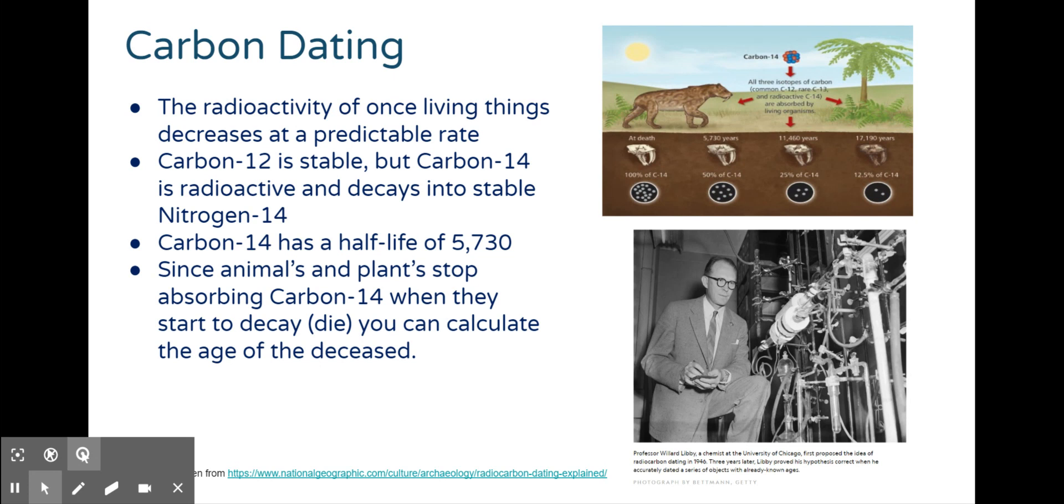We use half-lives in carbon dating. The radioactivity of once-living things decreases at a predictable rate. Carbon-14 decays to nitrogen-14 with a half-life of 5,730 years. Animals and plants stop absorbing carbon-14 when they die, so you can calculate the age of the deceased from how much carbon-14 is left in their bodies. That's how they carbon date fossils.